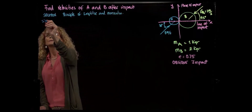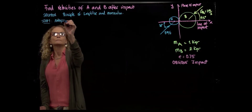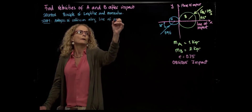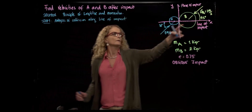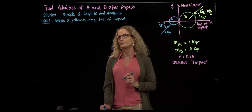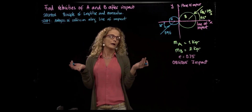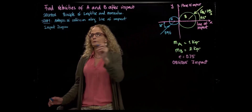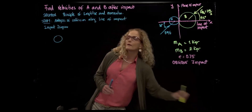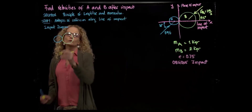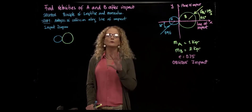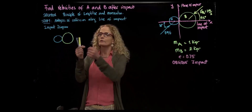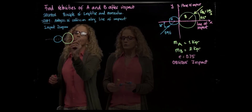The first step is to do the analysis of the collision along the line of impact. The line of impact is the one perpendicular to both surfaces. Since there is an impact and we don't need to calculate the impact force itself, we do the impact diagram using both bodies together. This is not a free body diagram because we are not including the weight — the impact force is so much bigger that any other force is neglected. The internal forces cancel out because they are opposite and equal in magnitude. This is the line of impact.